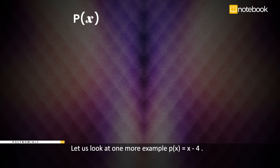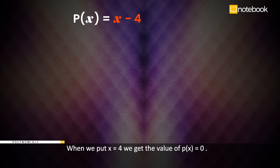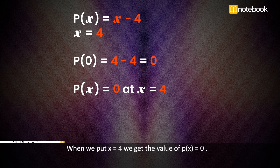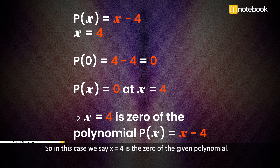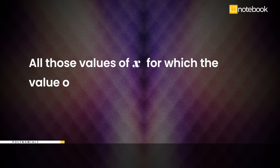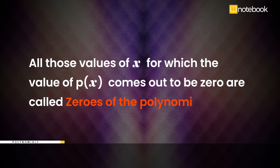Let us look at one more example: p(x) = x − 4. When we put x = 4, we get the value of p(x) equal to 0. So in this case we can say x = 4 is the zero of the given polynomial. So all those values of x for which the value of p(x) comes out to be 0 are called zeros of the polynomial p(x).